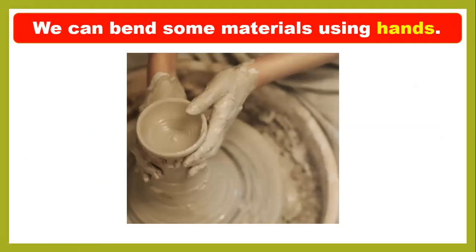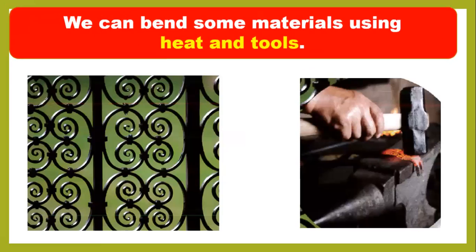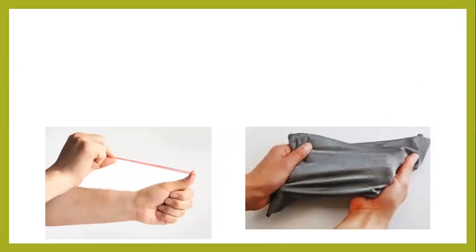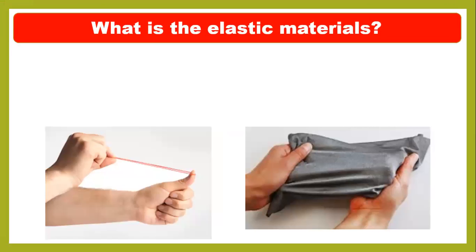To repeat the last lesson: we can bend some materials using our hands because these materials are soft, like clay and dough. Some materials can also be changed by heating and using tools. For example, a window frame made from aluminum and steel can be changed into different shapes using different tools and heat to give them the desired shape. Now today we will discuss what elastic materials are.